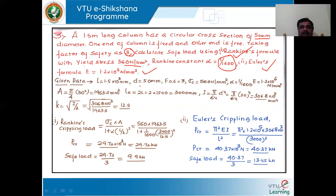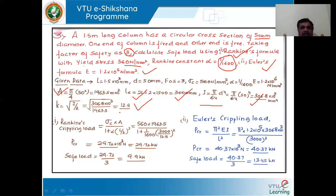Length is given, diameter is given, factor of safety is given, then the yield stress is 560, Rankine's constant is given, and Young's modulus for the material is given. First, let us find the area of the circular cross section: pi by 4 D squared. You will get the area. The effective length for one end fixed, other end free, is twice the actual length, giving 3000 millimeters. Since it is a solid circular section, I is equal to pi by 64 D to the power 4. So we get the value of moment of inertia. The radius of gyration k is equal to square root of I by A, giving k equal to 12.5.